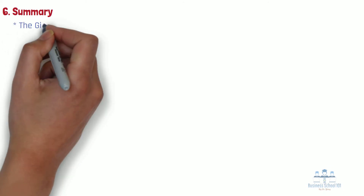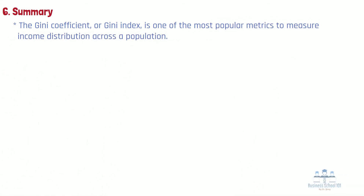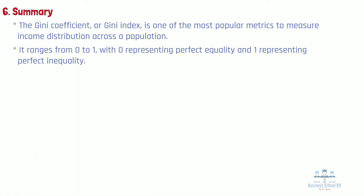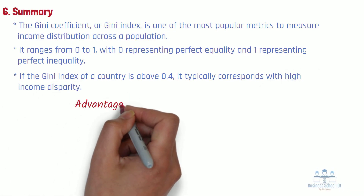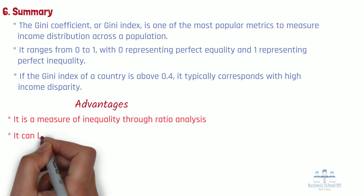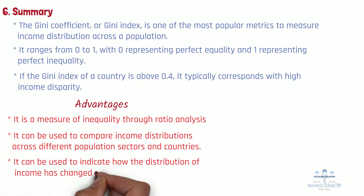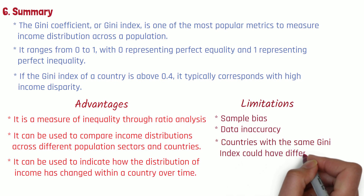Section 6: Summary. The Gini coefficient, or Gini index, is one of the most popular metrics to measure income distribution across a population. It ranges from 0 to 1, with 0 representing perfect equality and 1 representing perfect inequality. It's commonly recognized that if the Gini index of a country is above 0.4, it typically corresponds with high income disparity. Advantages include measuring inequality through ratio analysis, comparing income distributions across sectors and countries, and tracking changes over time. However, it suffers from limitations such as sample bias, data inaccuracy, and the fact that countries with the same Gini index could have different levels of income and distribution.